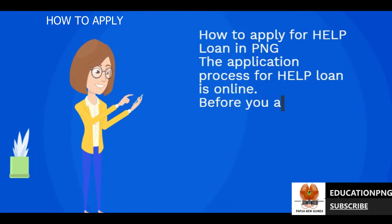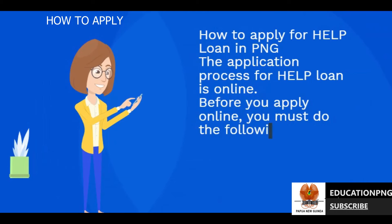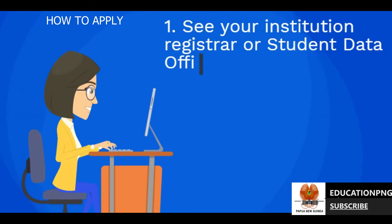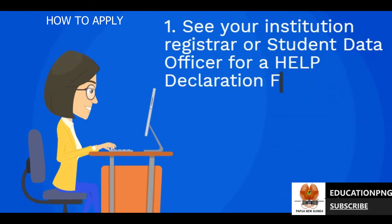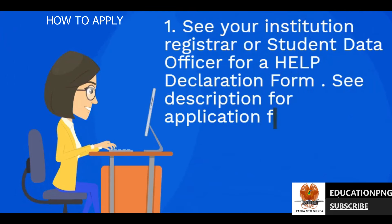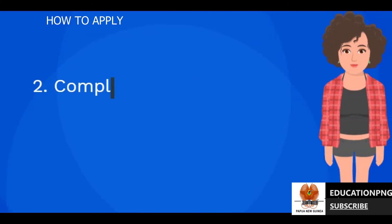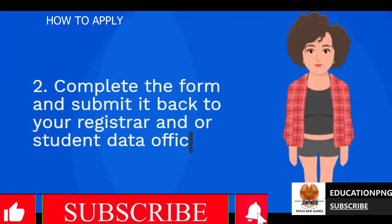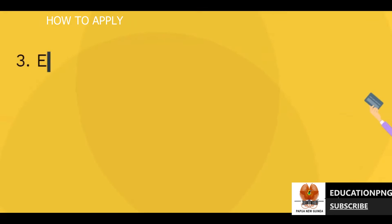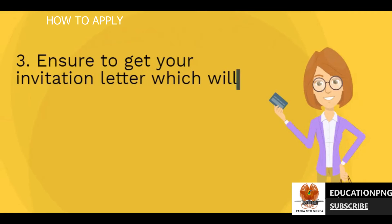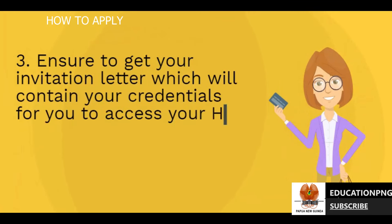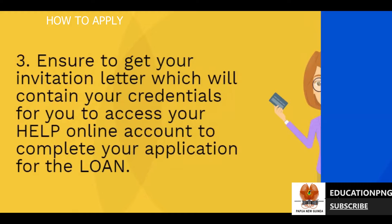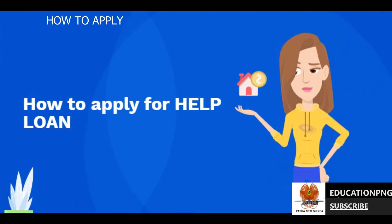How to apply for HELP Loan in PNG: The application process for the HELP Loan is online. Before you apply online, you must do the following. 1. See your institution registrar or Student Data Officer for a HELP Declaration Form — see description for application form links. 2. Complete the form and submit it back to your registrar and/or Student Data Officer. 3. Ensure to get your invitation letter, which will contain your credentials to access your HELP online account to complete your application for the loan.